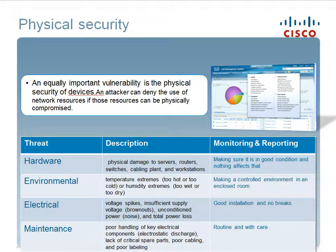Electrical threats include voltage spikes, insufficient supply, burnouts, uncontrolled power, noise, and total power loss. The only way to protect equipment against this is to have proper installations, use surge protectors, and make sure they have the correct voltage. Maintenance threats include poor handling of key electrical components, lack of critical spare parts, poor cabling, or poor labeling. This is addressed by routine care and extreme caution with all components.